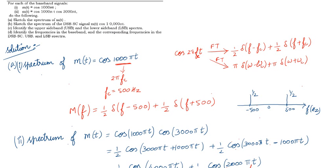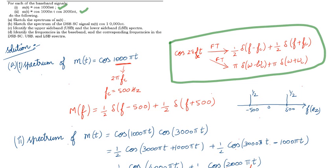Let us start with the question. We are given two message signals: the first is m(t) = cos(1000πt), and the second is cos(1000πt) multiplied with cos(3000πt). We will do them one by one. For the first signal, m(t) = cos(1000πt), we identify the frequency. Here 1000π is omega, and since omega = 2πf_c, we get f_c = 500 Hz.